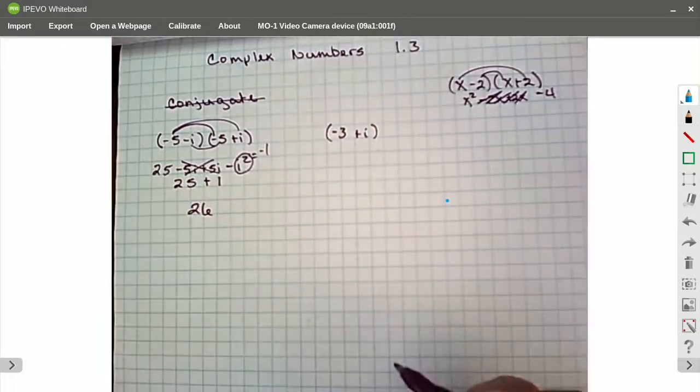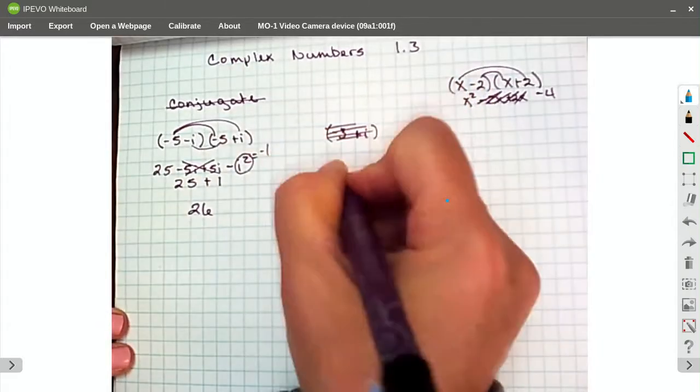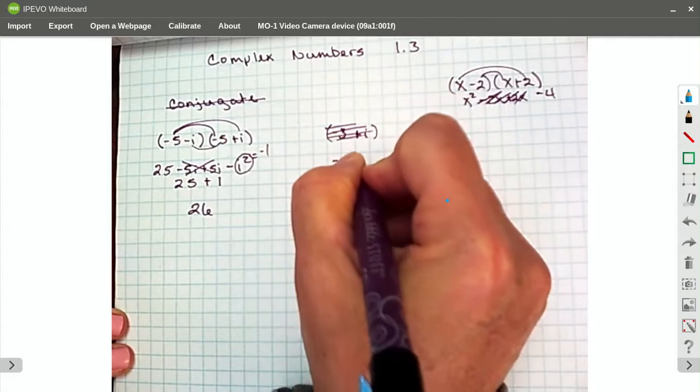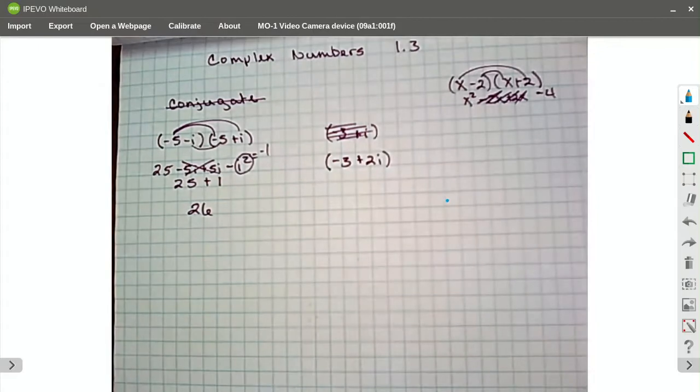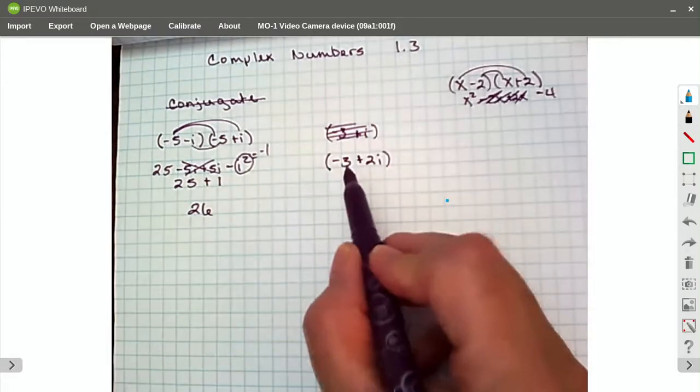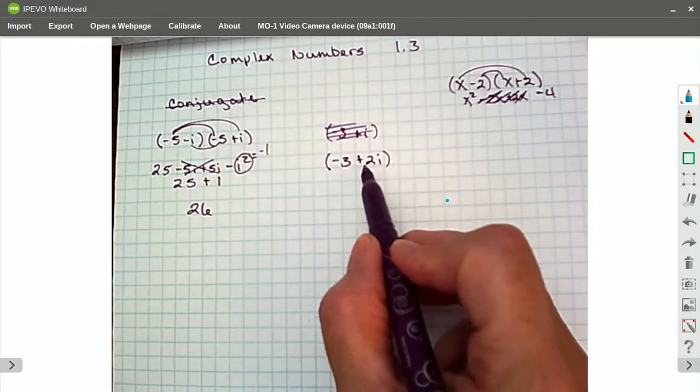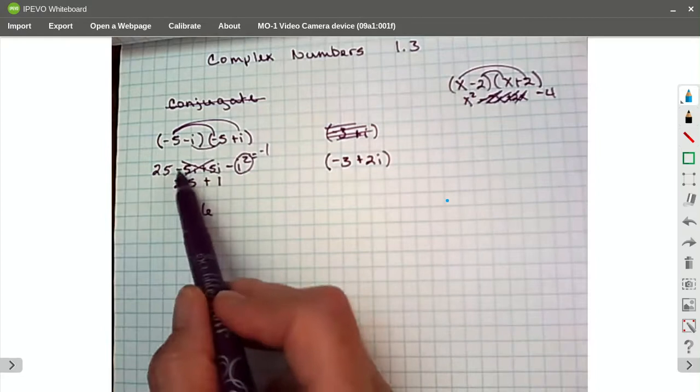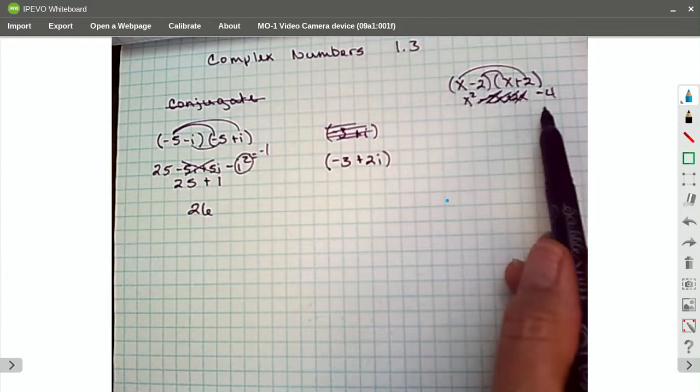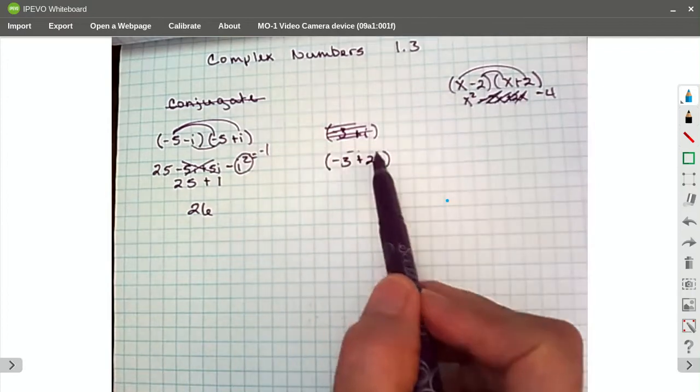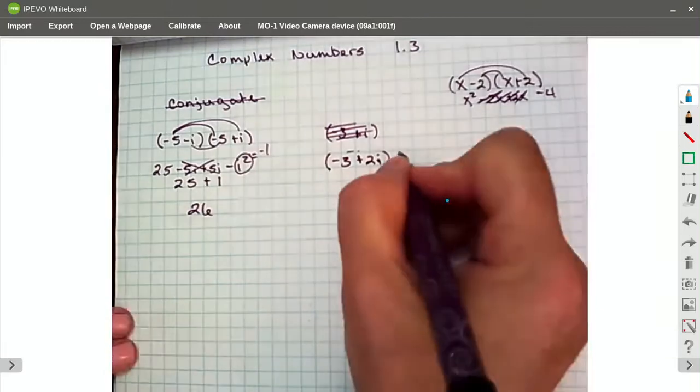I'm going to put a number in on this one. I'm going to say negative 3 plus 2i. And I'm going to tell you now that this is going to end up as 13. It's going to end up as 9 plus 4. It's always going to be the square of the first, just like it was here, and the square of the second. And you're going to add them together because it's going to be that i squared. Let's look at it.